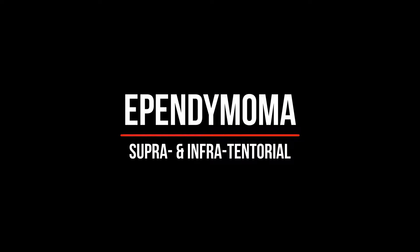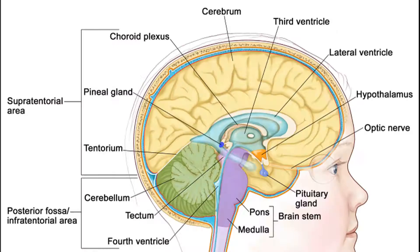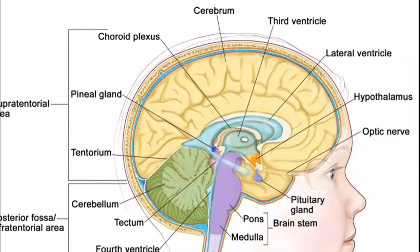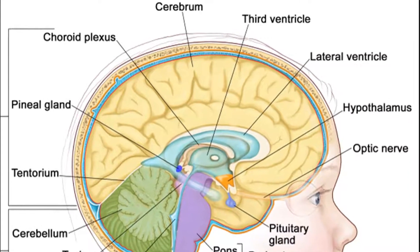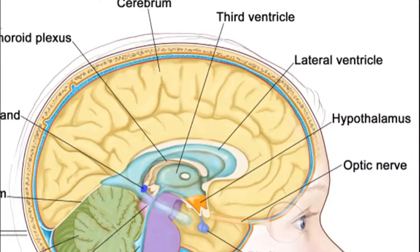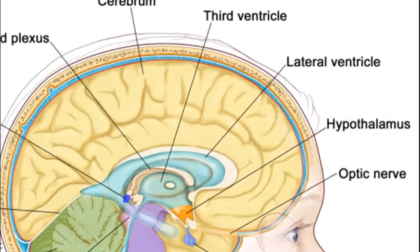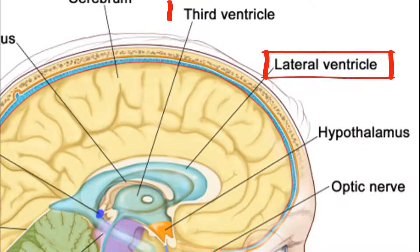Hey guys, it's Layma. Today we'll speak about ependymomas, starting with supratentorial ependymoma. Ependymoma is the epithelial lining of the brain ventricle — the ventricular system — and it is involved in the production of cerebrospinal fluid. In the supratentorial area, you are going to have ependymomas of the lateral ventricle and the third ventricle.